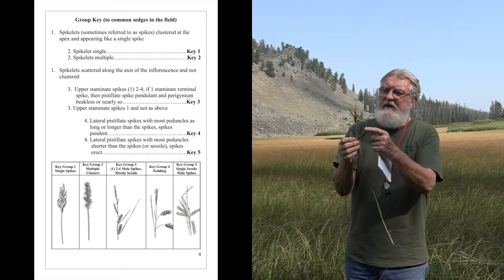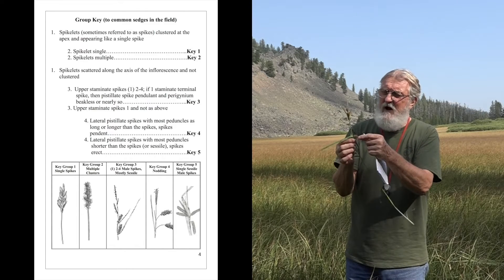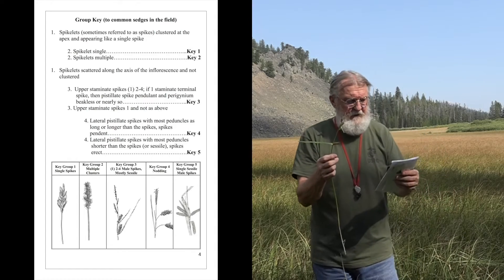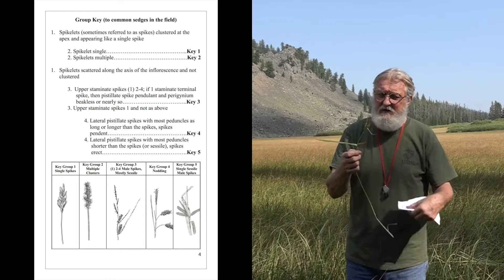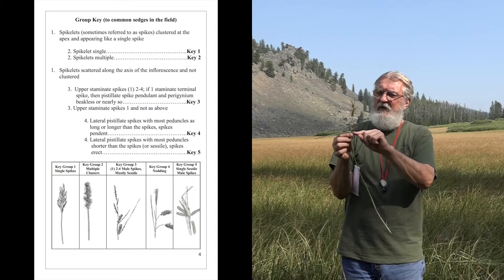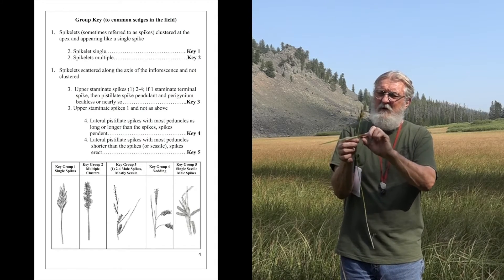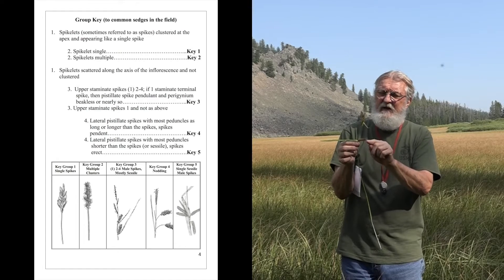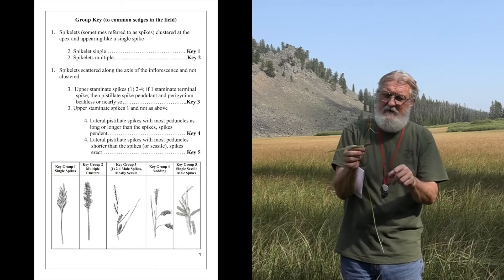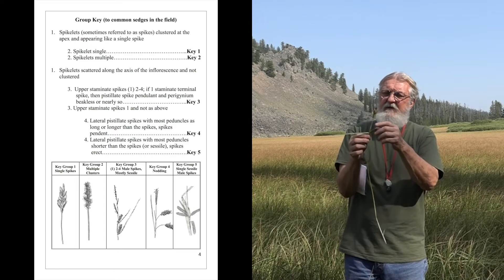The key thing about group three is that the spikelets are more or less sessile — sitting down on the stalk with only a tiny pedicel. As we go to groups four and five: imagine taking this and adding a longer pedicel so it hangs with a long pedicel equal in length to the spikelet or longer — they dangle down. That's group four.